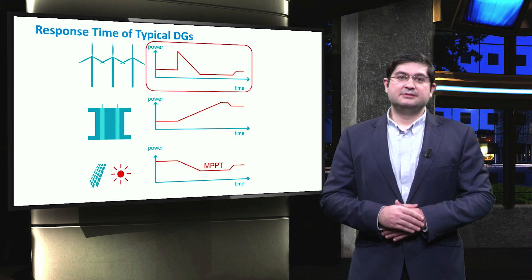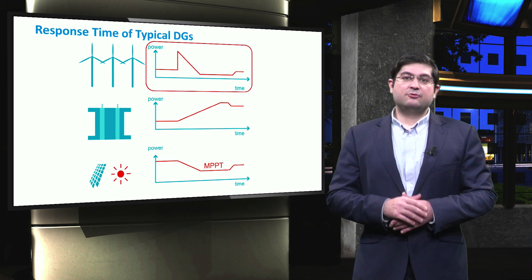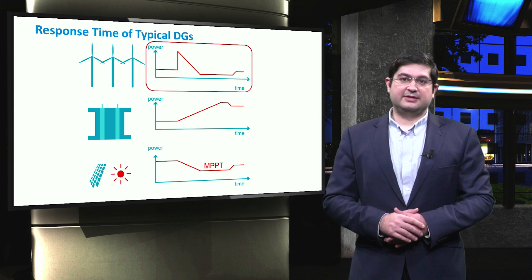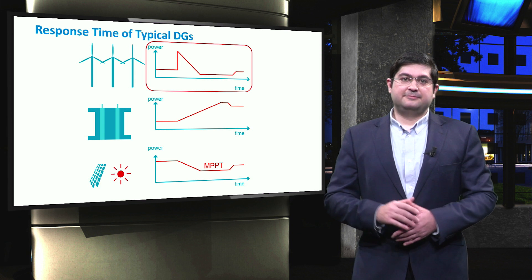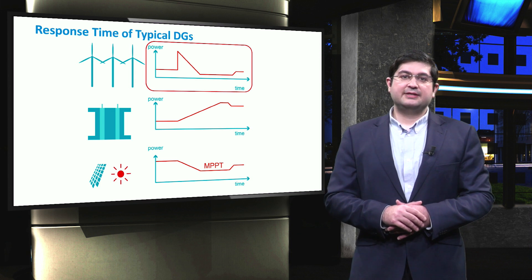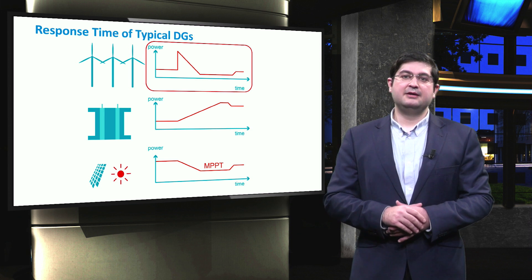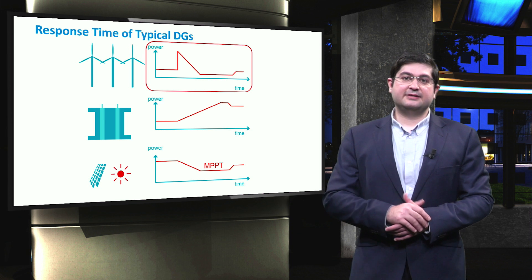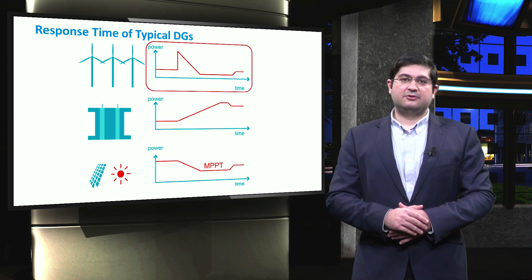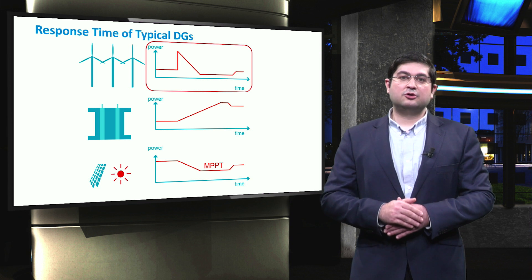In general, variable speed wind turbines are able to vary their active power very quickly following the frequency disturbance thanks to their power converters. However, as the rotor speed dramatically drops, they have to reduce their power support after a certain period of time, typically after tens of seconds depending on the inertia of rotor mass. Therefore, wind turbines can support the frequency only for a short period of time.